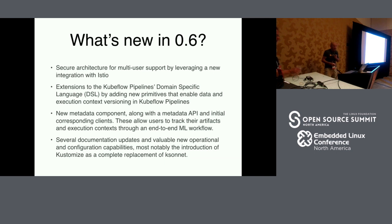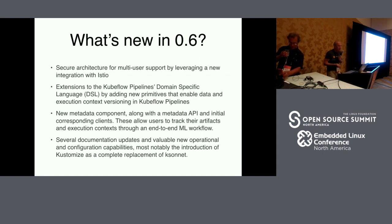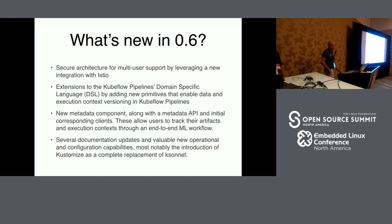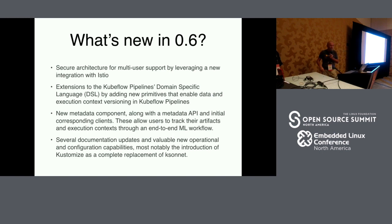Kubeflow is progressing very fast. If you saw the presentation about machine learning operations yesterday, it was Kubeflow 0.5; now it's 0.6 — in one day. What's new: extended security, extensions to the pipeline, new metadata components, and a lot of documentation updates. As a reference point, I started the example on Kubeflow 0.4, and when I was converting it to 0.6 I had to make quite a few changes.